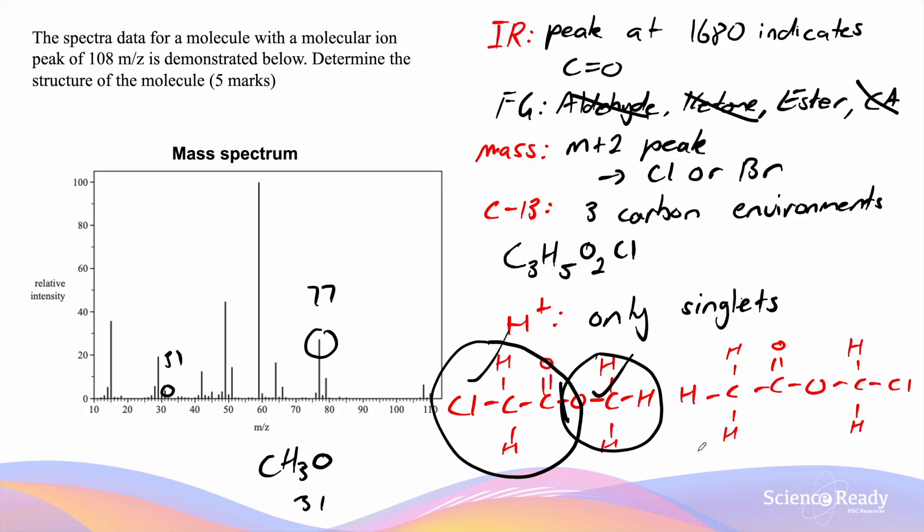So at the moment we are confirming that it could be this. However we would need to check for our other isomer to make sure that this spectrum indicates to us methyl-chloroethanoate.